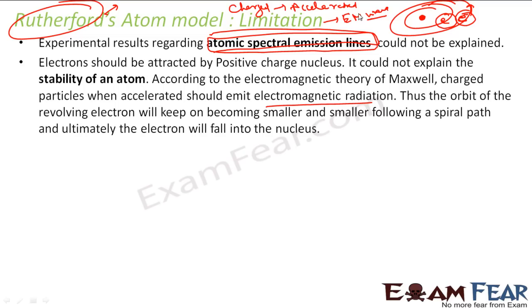So with that, if you see, the energy will be lost and finally the electron should go and meet the nucleus, and the atom should shrink — but that's not happening. The Rutherford model could not tell much about the stability of the atom. It won't take much time; I think 10 to the power minus 8 seconds it will take for the electron to collapse into the atom, if Maxwell is correct — and Maxwell was correct, he proved that. So the model is not correct.